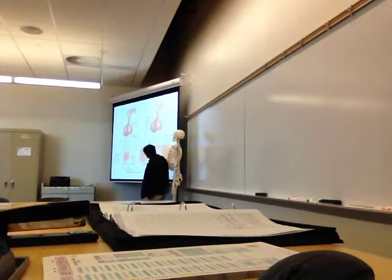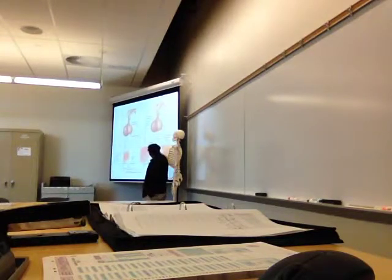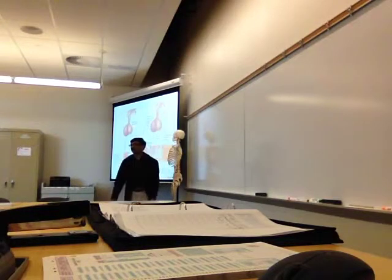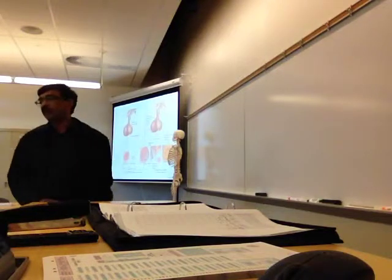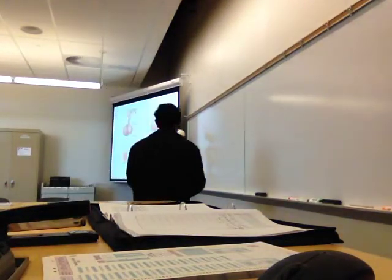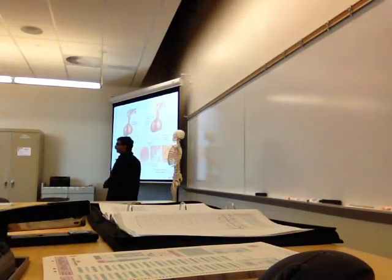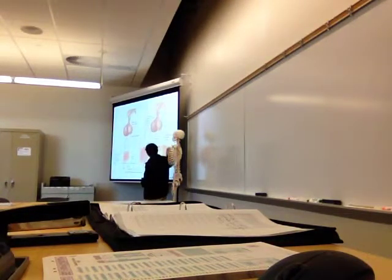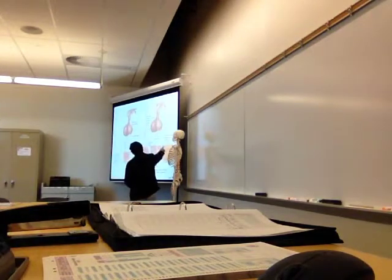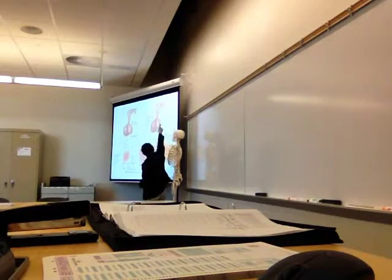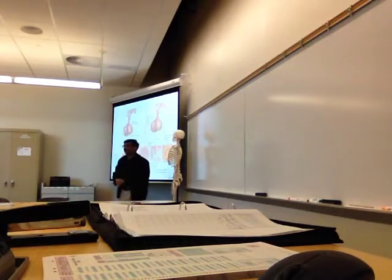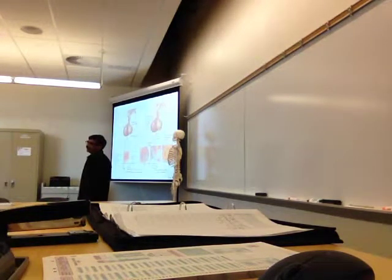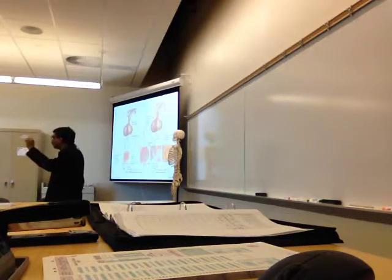When ovulation occurs, the egg is released, and the remaining part of the follicle is converted to corpus luteum. The remaining part of the Graafian follicle becomes corpus luteum, which works as a temporary gland. It produces three hormones: estrogen, progesterone, and inhibin. Those three hormones will inhibit the pituitary and the hypothalamus, so the pituitary will not release FSH and LH.